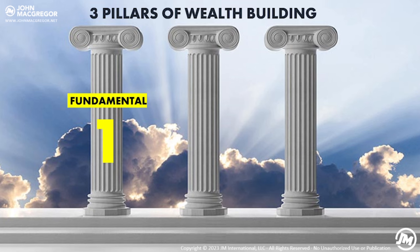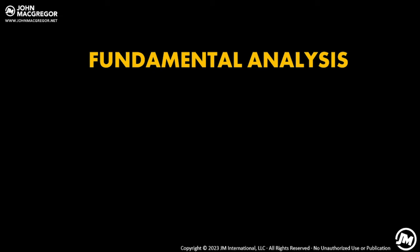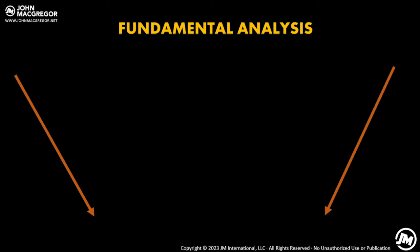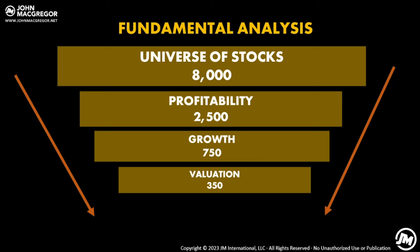Using technology, you can do this fundamental analysis in seconds to easily screen for high probability stocks. I look at my screen about every two weeks to find new stocks that hit my parameters. In fundamental analysis, I'm looking at four big-picture things: company profitability, company growth, the valuation of the company, and what I call beyond the numbers — that's the analysts following the companies and the news. By using preset screeners, you can do this literally in seconds.